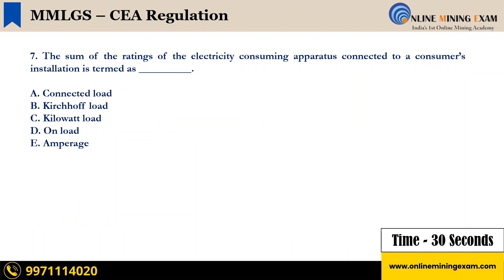The seventh question: the sum of ratings of electricity consuming apparatus connected to a consumer's installation is termed as — A) Connected load, B) Catch-offs load, C) Kilowatt load, D) On load, E) Amperage. Your time starts now.